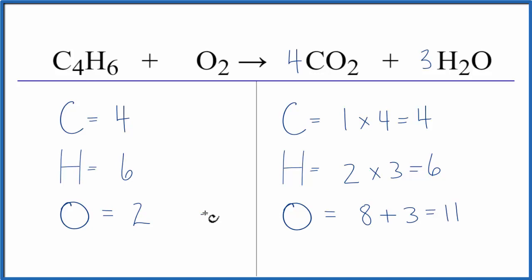Two times something is going to equal eleven. It turns out two times eleven over two, that equals eleven. So we could put eleven over two in front of the oxygen, and this equation would be balanced.